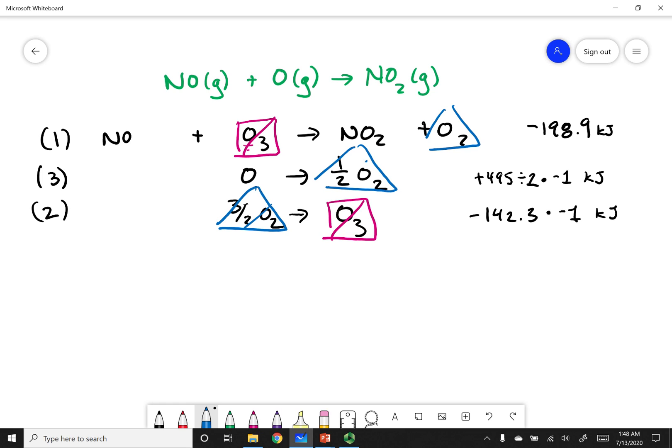Now I can write down anything that wasn't canceled out, which gives me the original equation that I was after. If I go ahead and do the math, where I add all these delta H's together with all the manipulations involved, I get negative 304.1 kilojoules.